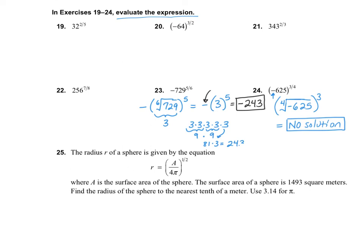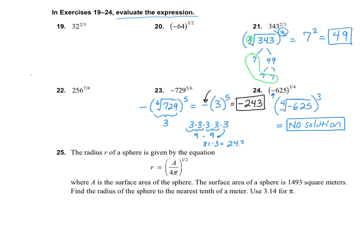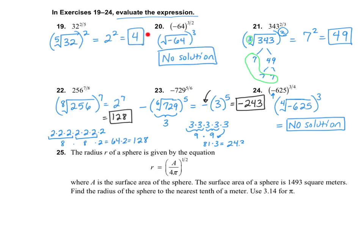Number 21 is the third root of 343, all squared. I'm not sure what divides into 343 — I'll try 3, but that gives 114 and a third, so that doesn't work. It's not even and doesn't end in 5. How about 7? 343 divided by 7 equals 49. 49 is 7 times 7, so we have three 7s and an index of 3 — so the third root of 343 is 7. Don't forget the square: 7 squared is 49. I would like for you to do 19, 20, and 22 on your own. For number 19, I got 4. Number 20 is no solution, and number 22 is 128.